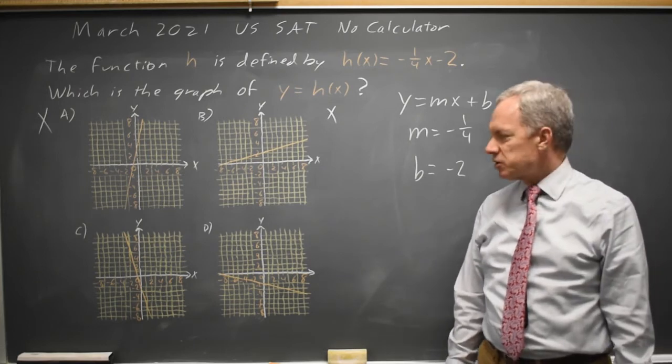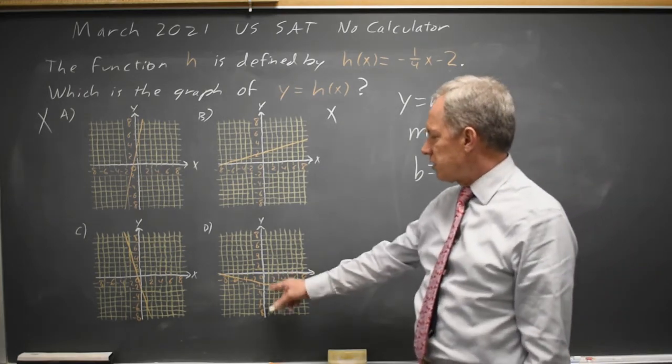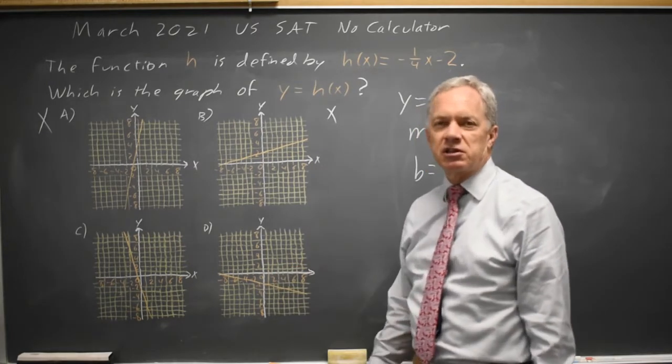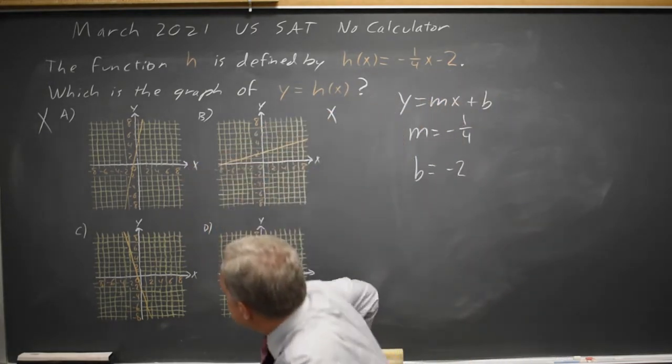I do always check the College Board isn't messing with the scale and making the vertical squares a different unit than the horizontal squares, but they're not messing with us in this case.